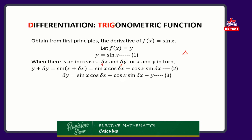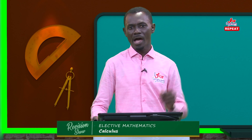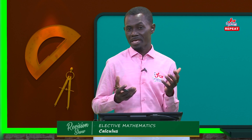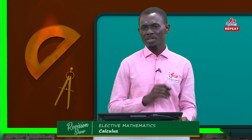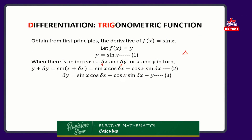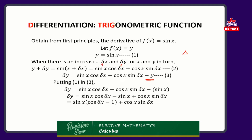Now that we have this, how do we find the small change in y? Delta y — all we are doing now is making delta y the subject. We would have sin x cos delta x plus cos x sin delta x minus y. Note that we have minus y here, but we know what y is from equation 1. So we substitute equation 1 into equation 3. We'll have sin x cos delta x plus cos x sin delta x minus sin x. Then we can group the terms to get sin x (cos delta x minus 1) plus cos x sin delta x.